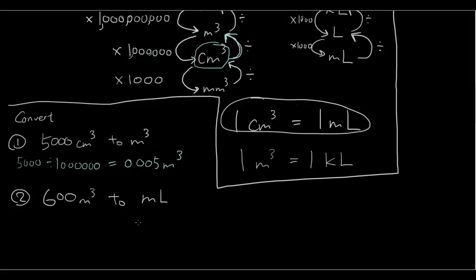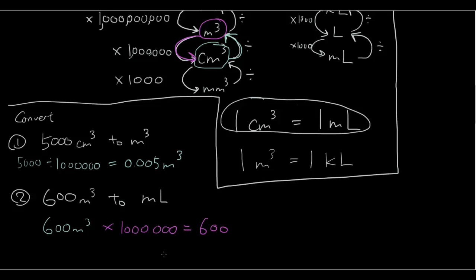Second question: 600 meters cubed to milliliters. First, convert meters cubed to centimeters cubed by multiplying by a million, which gives 600 million centimeters cubed. Then, since 1 centimeter cubed equals 1 milliliter, that is 600 million milliliters.